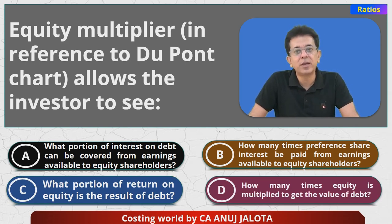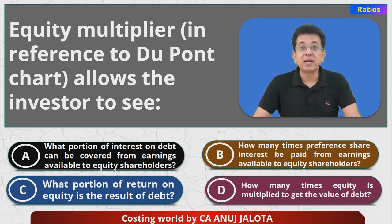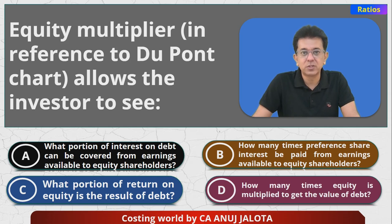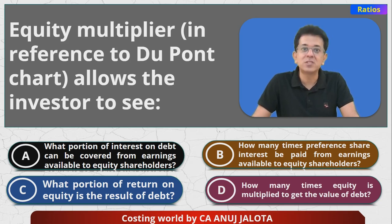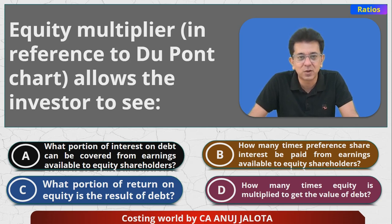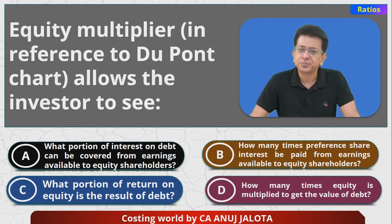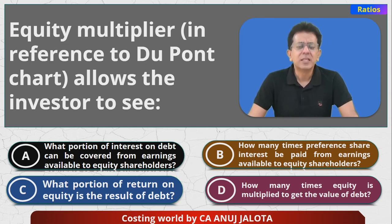Option C: what portion of return on equity is a result of debt; and Option D: how many times equity is multiplied to get the value of debt. Now, you might have done DuPont chart. DuPont chart was made by a gentleman whose surname was DuPont — it's a surname of a person, not 'dew point'.